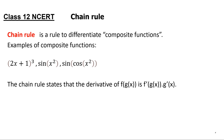The chain rule states that the derivative of f of g of x — that's how we represent composite functions, where g of x is inside f of x — is f dash of g of x times g dash of x. So we first differentiate the outer portion of the function, keep the inside the same, and multiply it by the derivative of the inside function. Let's understand this better with a few examples.